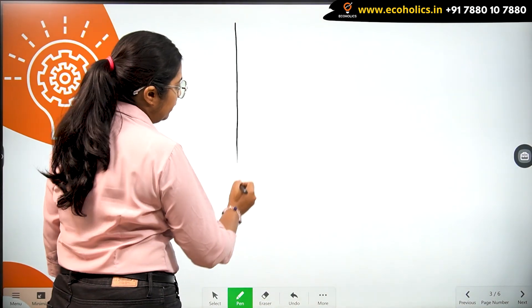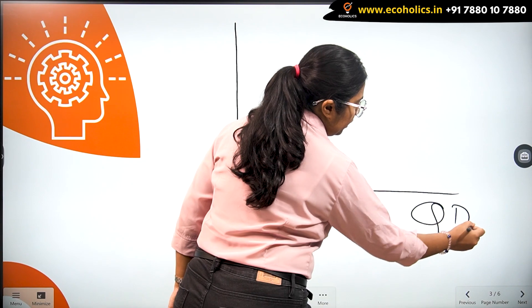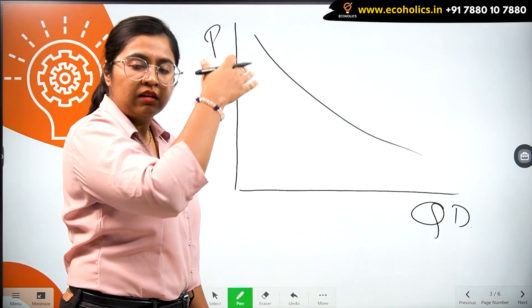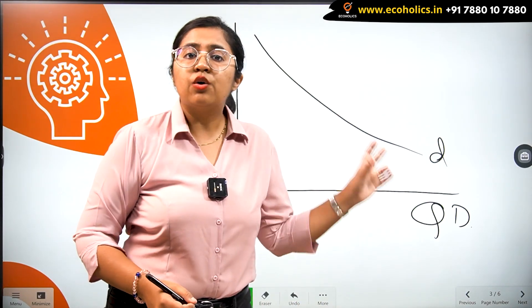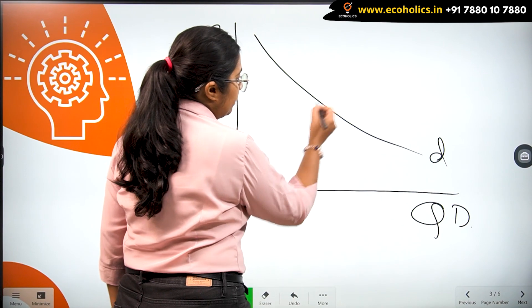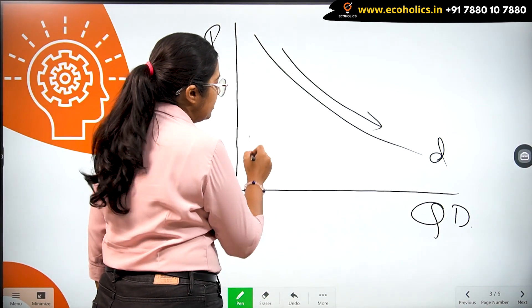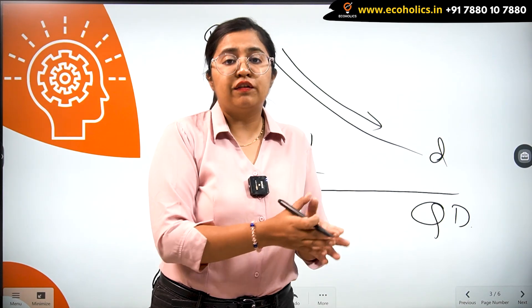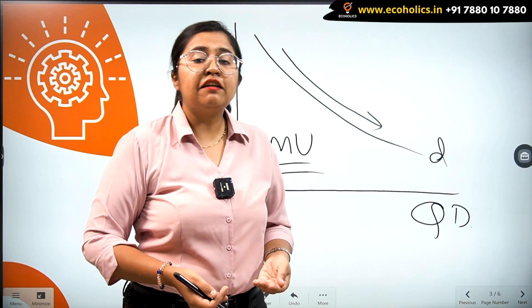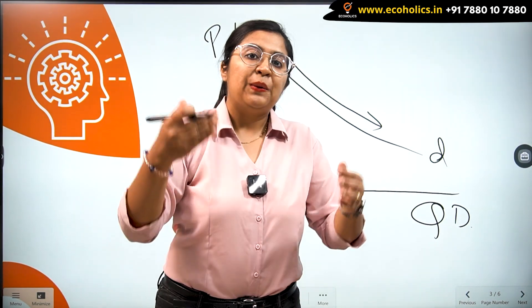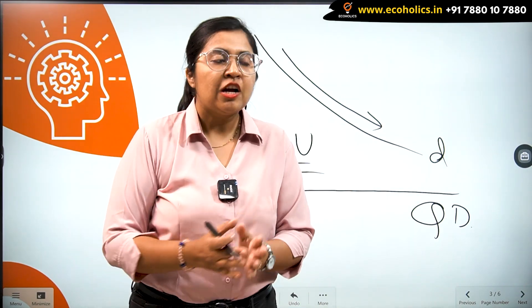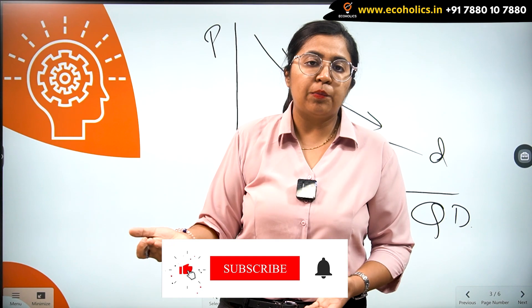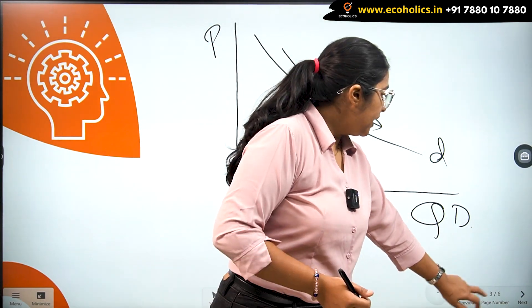When we draw a demand curve, we have quantity demanded on the x-axis and price on the y-axis. The demand curve is a downward sloping curve, and the reason is the application of diminishing marginal utility: for every additional unit of a commodity consumed, the utility or satisfaction gained gradually declines. This is one of the prime reasons why the downward slope in the demand curve actually happens.